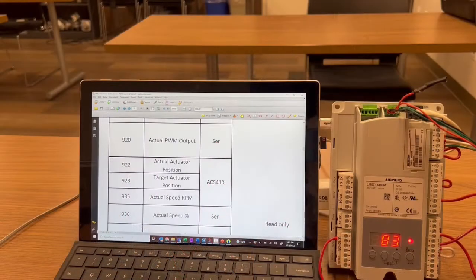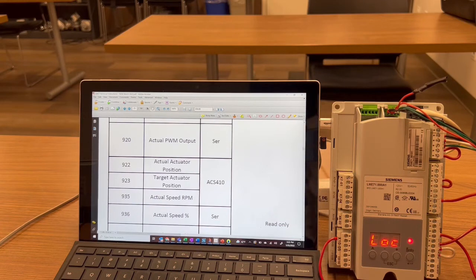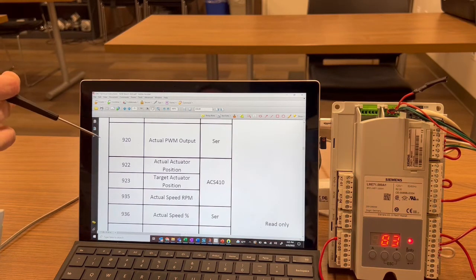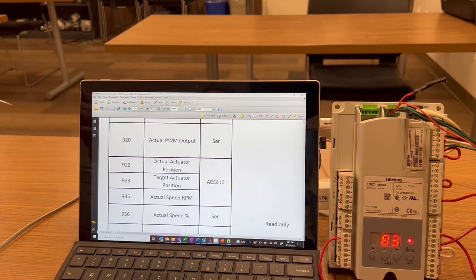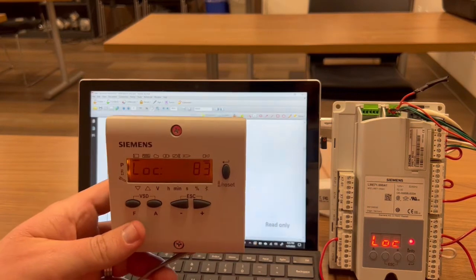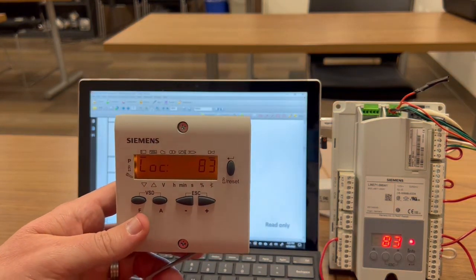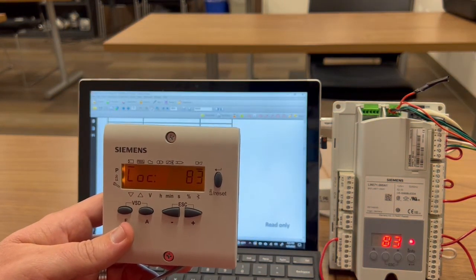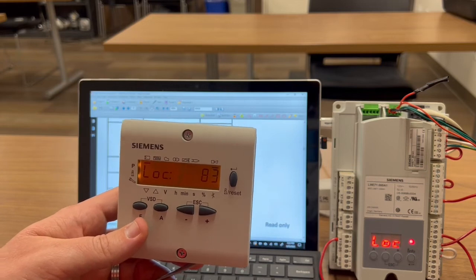Some helpful parameters for troubleshooting a lock 83 are parameter 920 for the actual PWM output and parameter 936 for the actual speed percentage. And you can access these parameters with a remote display. And you'll need to get into service mode to access these parameters.